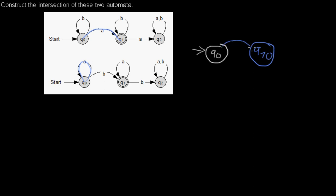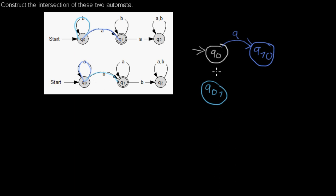So here we have our A transition. Now let's look at B. We have a transition from Q0 to Q0 with B in the first automaton, and from Q0 to Q1 with B in the second automaton. So I will create a new state Q01 which you can reach with a B.